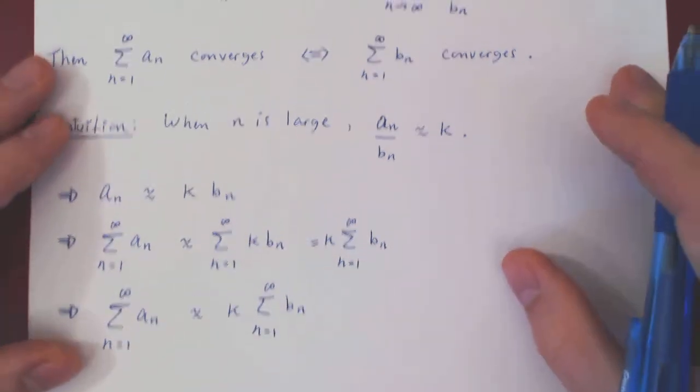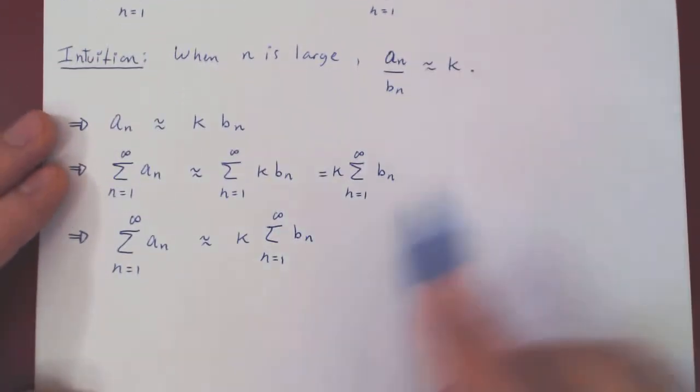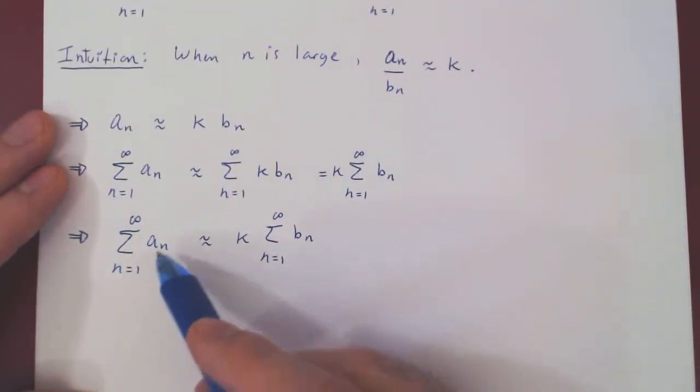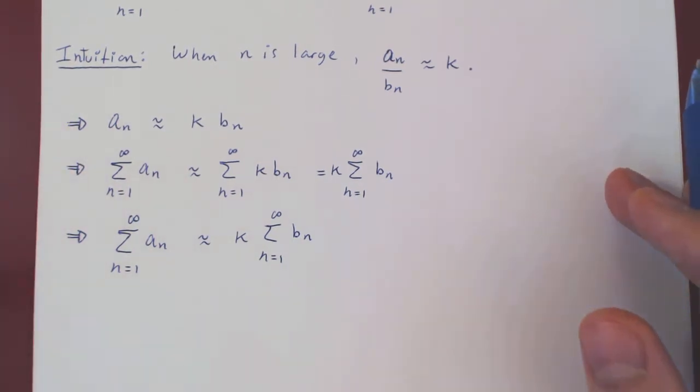And now look at this. As both sequences are positive, we have two series of positive terms. And we know that when we're summing positive terms, there are only two possibilities. Either the sum is finite or the sum is infinite, right? As we add more and more positive terms, the sum becomes larger and larger and larger.